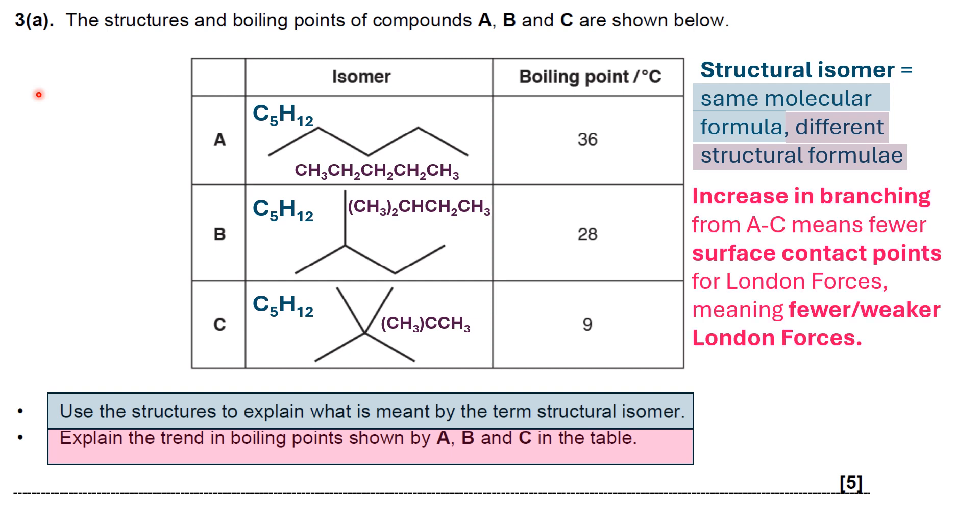So the increase in branching means fewer surface contact points for London forces, which in turn means fewer or weaker London forces. And this affects the boiling point because there's less energy needed to overcome the London forces in the first place. So the boiling point goes down.